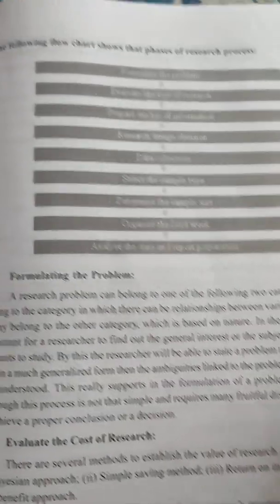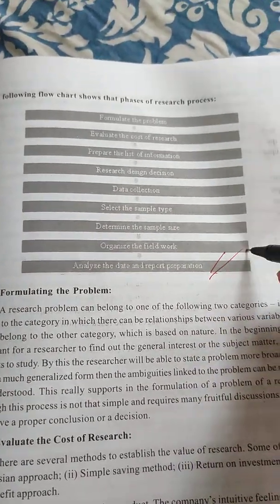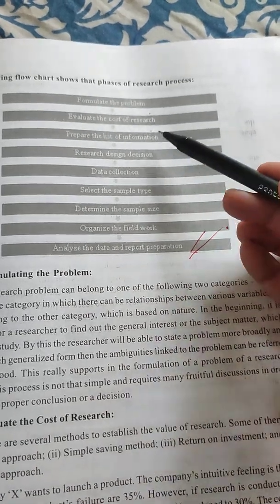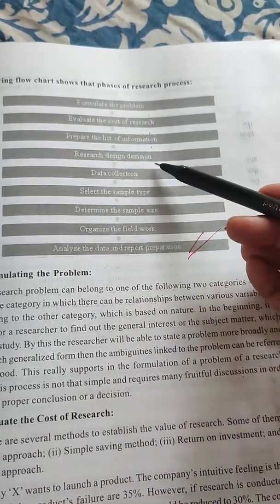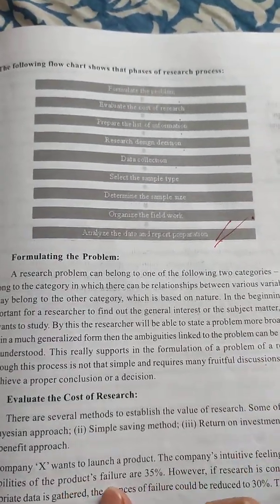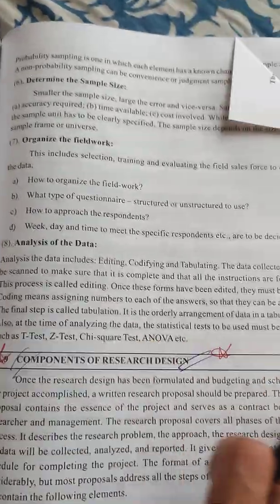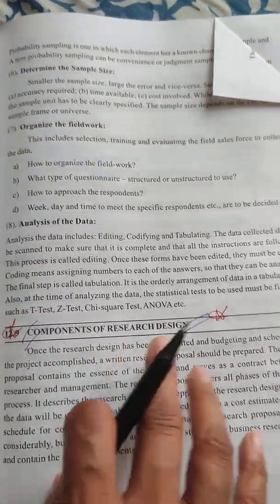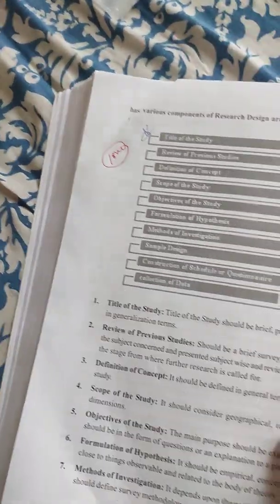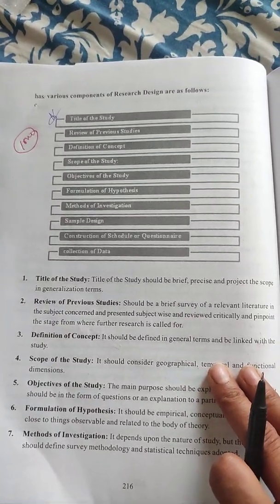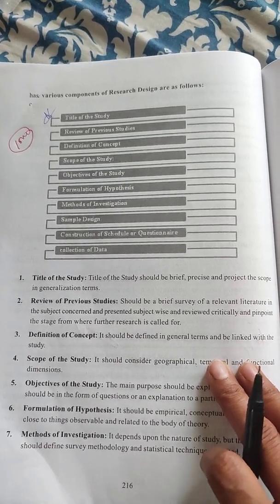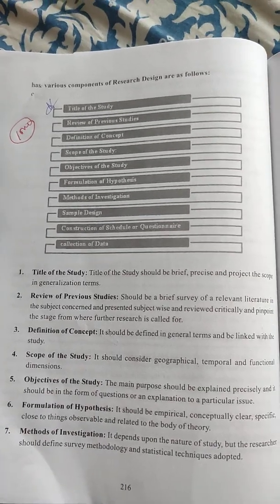The research process phases include: formulation of the problem, evaluating, preparing research design, data collection, sample type, sample size, and fieldwork. Next, components of research design — this is worth 10 marks. The components include: title of the study, review of previous studies, definition of the concept, scope of the study, and objectives of the study. See page 216.